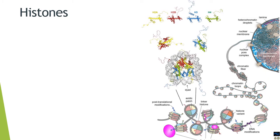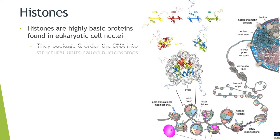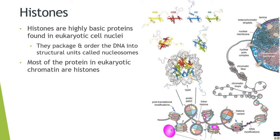Associated with the chromatin are histones. They are highly basic proteins found in eukaryotic cell nuclei. Their function is to package and order the DNA into structural units called nucleosomes. Most of the proteins associated with the chromatin are usually histones.